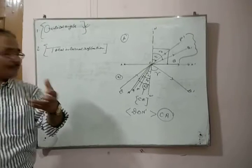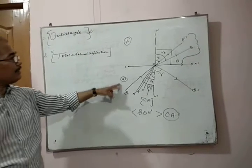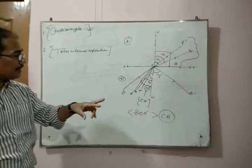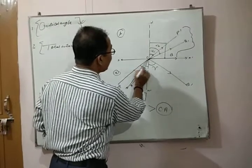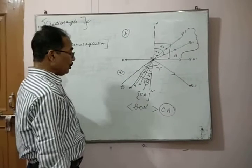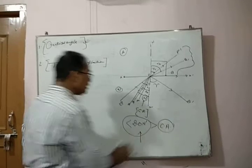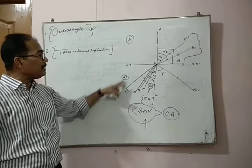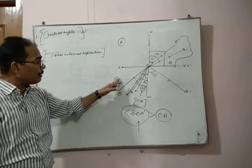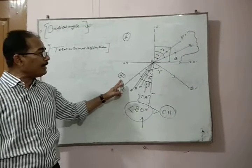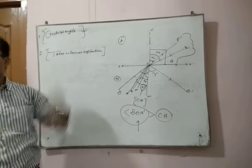Every optical denser medium has its own critical angle. When the ray of light passes from a denser medium to a rarer medium, and if the angle of incidence in the denser medium is more than its critical angle, then the ray of light returns in the same medium. Such a phenomenon is known as total internal reflection.